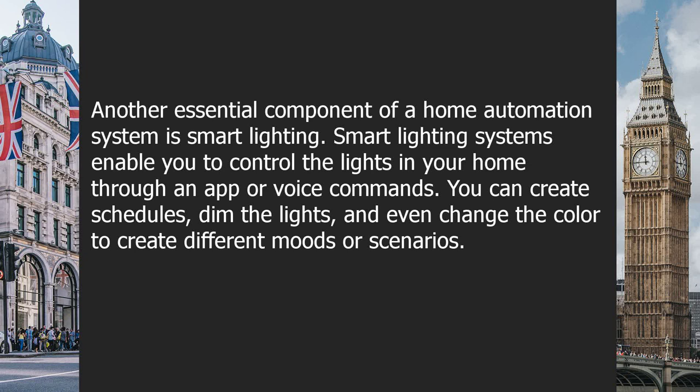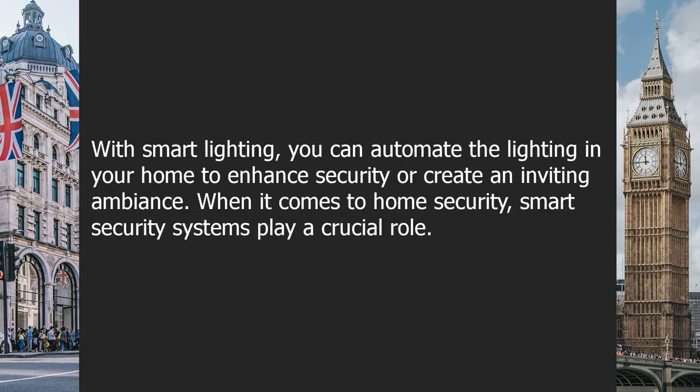Another essential component of a home automation system is smart lighting. Smart lighting systems enable you to control the lights in your home through an app or voice commands. You can create schedules, dim the lights, and even change the color to create different moods or scenarios, automating lighting to enhance security or create an inviting ambience.